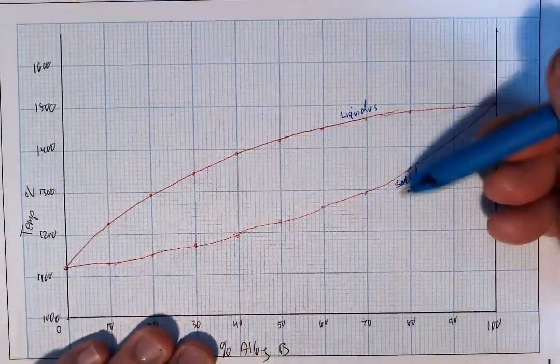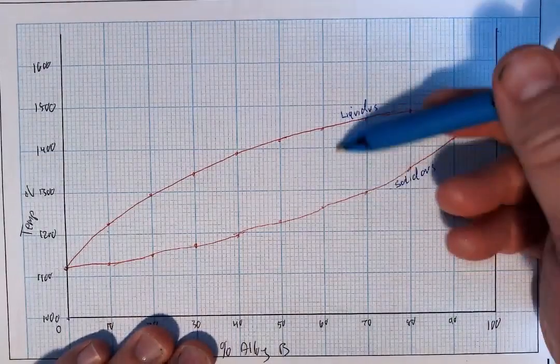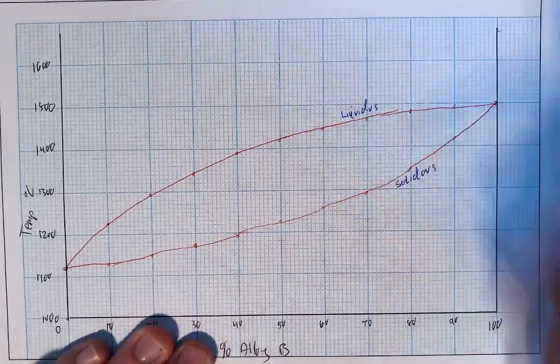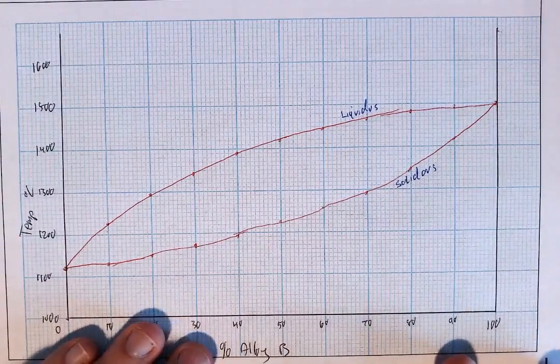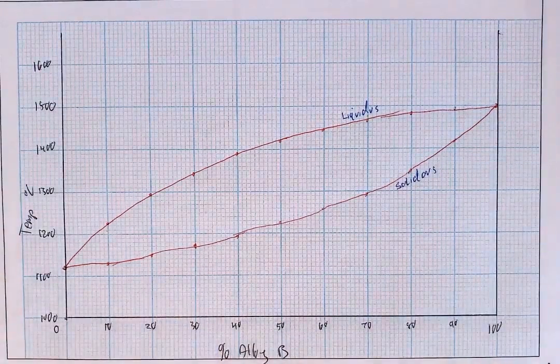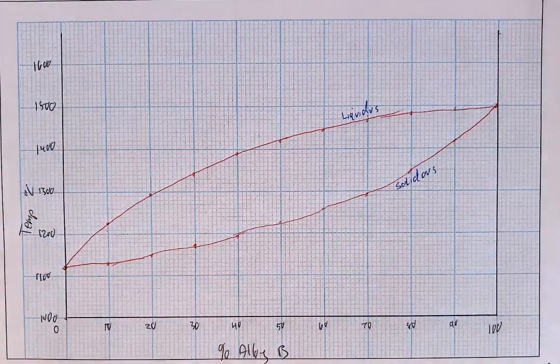And that point down there is your solidus line. So everything above that line is a liquid, everything below that line is a solid. And in the middle here we have a mixture of a solid and a liquid which we call the pasty stage. So that's the first part, the most straightforward part of this question.